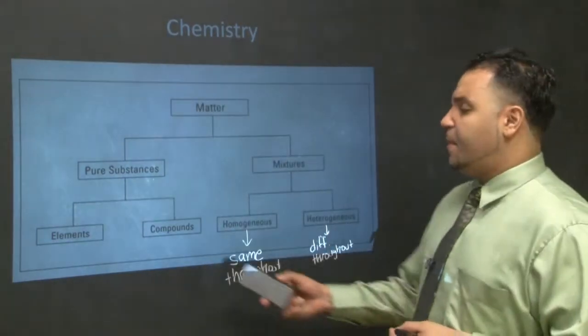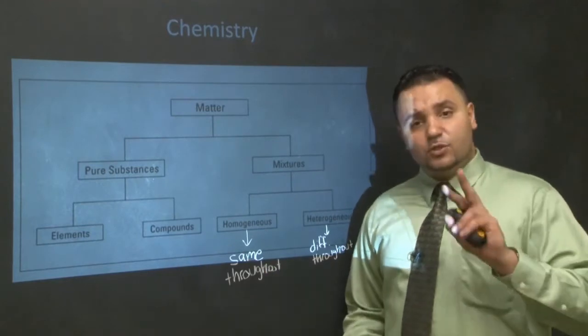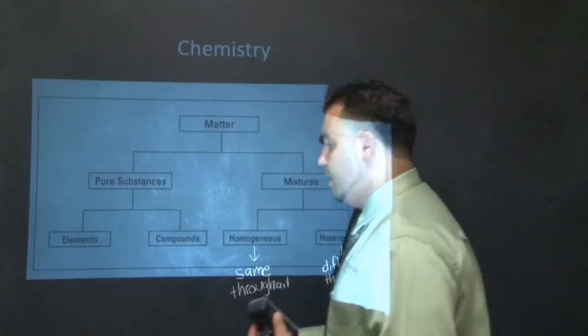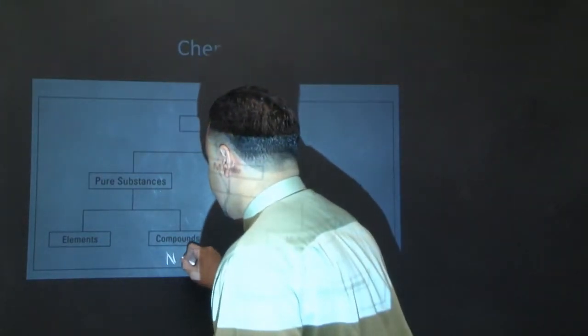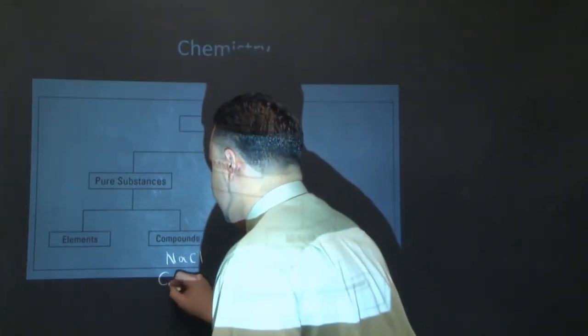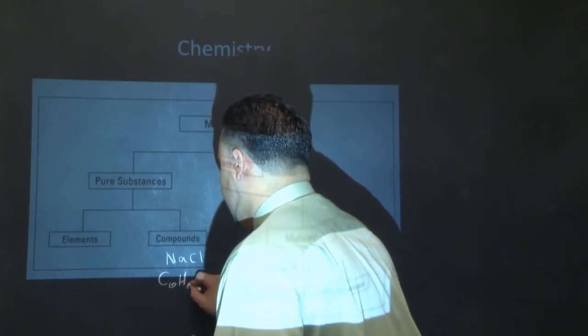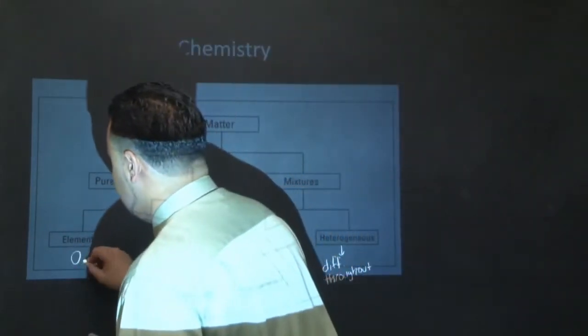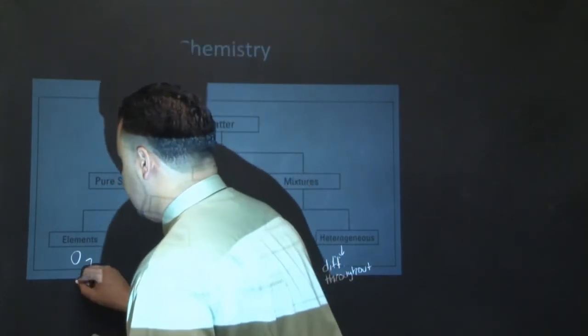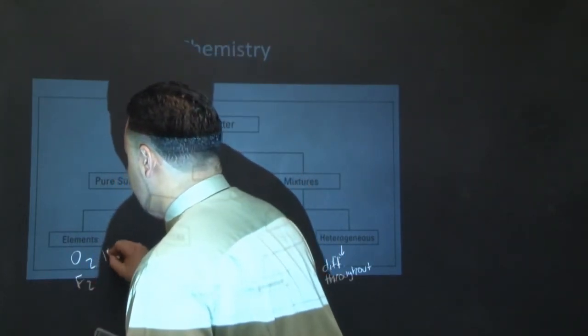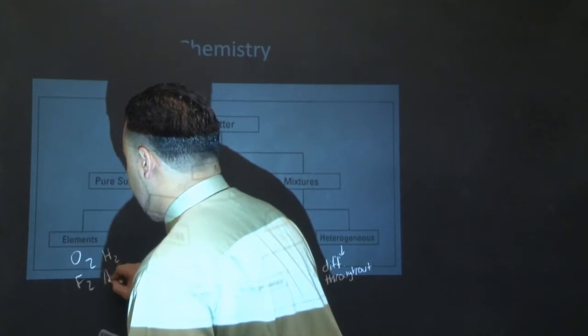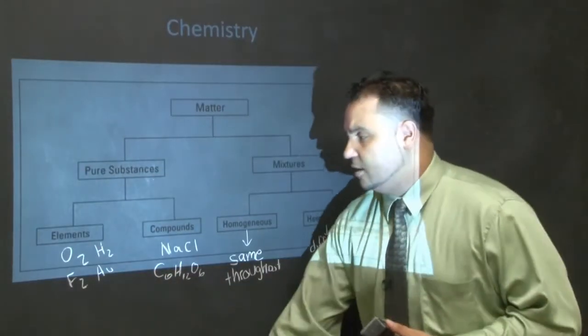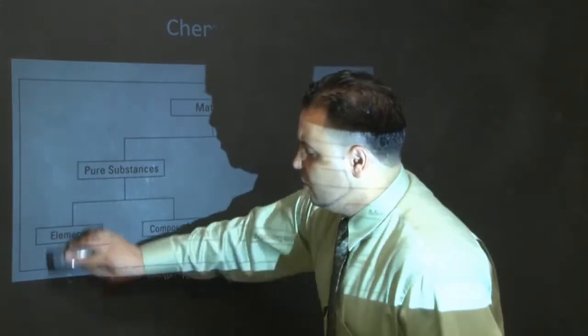Compounds, for example, have to be two or more elements. So sodium chloride, table salt, would be a great example. Another example of a compound would be glucose from biology. Great example of an element would be oxygen. If it has the two there, it's still fluorine or hydrogen gas - these are all great elements, or even gold. That's the pure element, the pure substance.